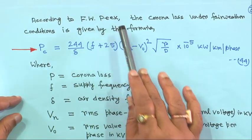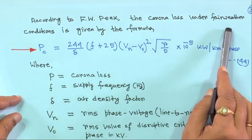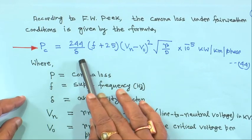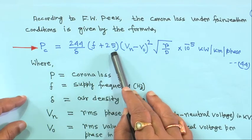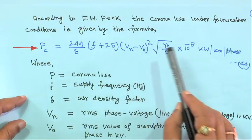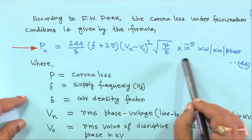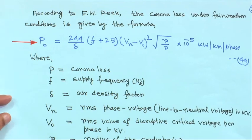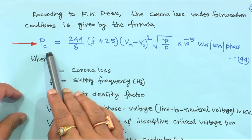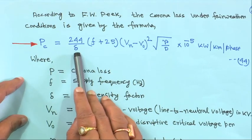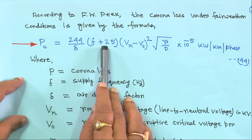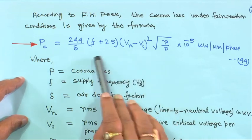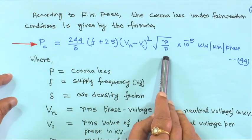For example, F.W. Peek gave a corona loss formula under fair weather conditions. It is: 244/δ × (f + 25) × (VN − V0)² × √(R/D) × 10⁻⁵ kilowatt per kilometer per phase. Corona loss is inversely proportional to delta (air density factor), directly proportional to frequency, directly proportional to (VN − V0)², and also directly proportional to √(R/D).